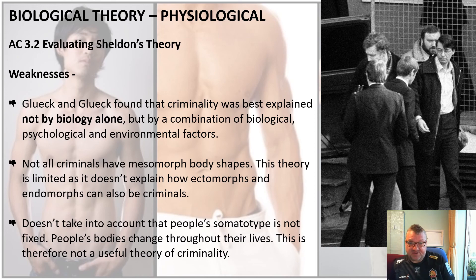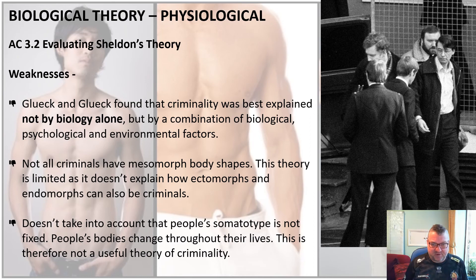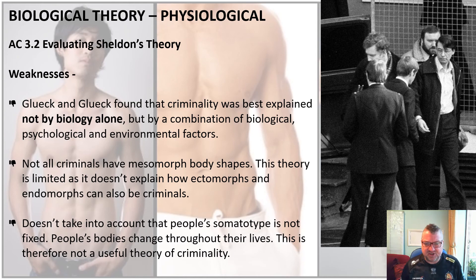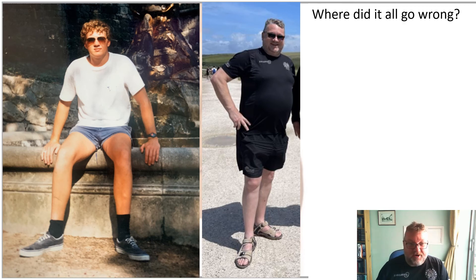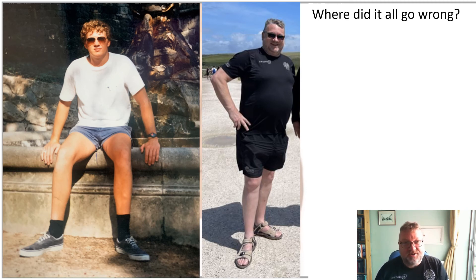A further weakness is that one somatotype is not fixed — people's bodies change throughout their lives. If body shape changes, then surely criminality should change too, which undermines the theory's credibility. As a personal illustration, the speaker shows photos of himself at age 21 versus more recently, demonstrating a completely different somatotype, lending concrete evidence to the weakness that body shapes change over time.